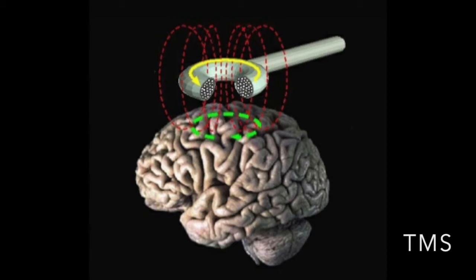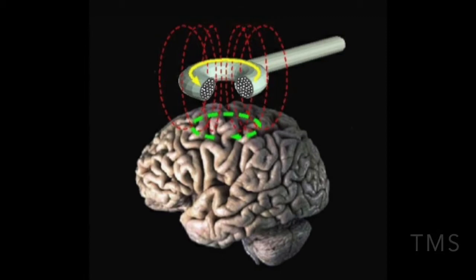Immediately following this burst of action potentials, activity in the targeted brain area is inhibited, causing what is known as a virtual lesion.